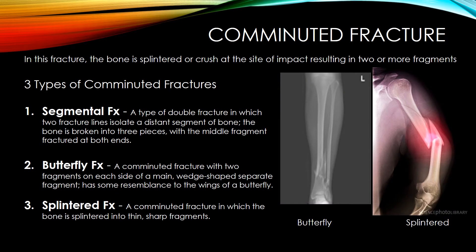A comminuted fracture is one where the bone is splintered or crushed at the site of impact, resulting in two or more fragments. There are three types: a segmental fracture is a type of double fracture where two fracture lines isolate a distant segment of bone — the bone is broken into three pieces with a middle fragment fractured at both ends. A butterfly fracture is a comminuted fracture with two fragments on each side of a main wedge-shaped separate fragment, resembling butterfly wings. A splintered fracture is a comminuted fracture in which the bone is splintered into thin sharp fragments.